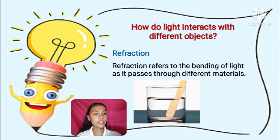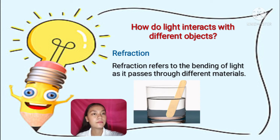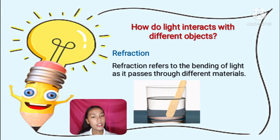To better understand light, let us look at how light interacts with different objects. First is refraction. Refraction refers to the bending of light as it passes through different materials. For example, a popsicle stick in a glass of water appears bent, because different parts of the stick interact with different materials. Light moves faster in air than in water, and that is why the popsicle stick looks bent.